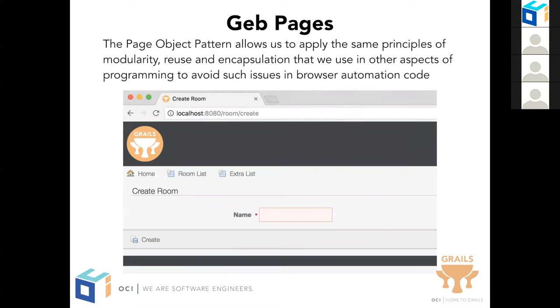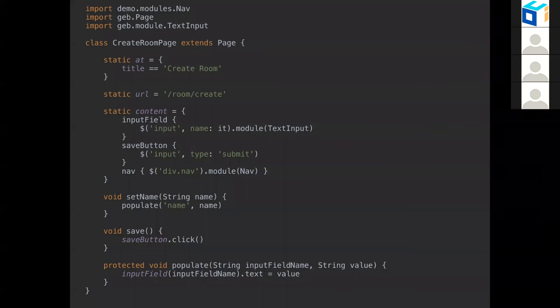Geb pages are mostly about making tests maintainable and readable by applying the principles of modularity, reuse, and encapsulation to the document object model. Pages come with a DSL which allows you to define page content elements. This way, all the selectors in your test harness are hidden from the test classes themselves and are defined in pages. This also allows the use of aliases for elements instead of using complex selectors, which might muddle the water when it comes to test readability. We have here an example of the CreateRoom page — this is the form where we create a room in the application.